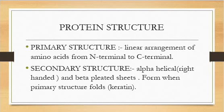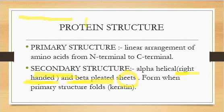Now the secondary structure has two types: one is the alpha helix and the second is the beta pleated sheet. Alpha helix is mostly right-handed. These two are the secondary structures of protein. One is alpha helical and the second is beta pleated sheets. This particular structure is folded — when a primary structure folds into a two-dimensional sheet or helix formation, that particular structure will be known as the secondary structure.